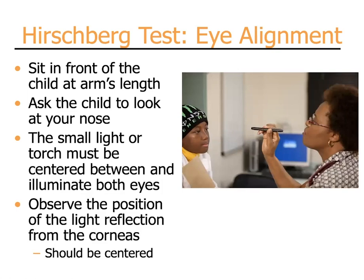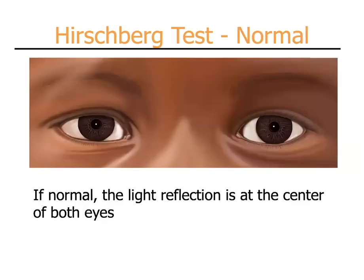The Hirschberg test is a simple test for assessing eye alignment or strabismus. It utilizes a small torch or pen light. Sit in front of the child at arm's length, ask the child to look at your nose, and while centering the small light in front of you, aim the beam centrally between the patient's two eyes so it illuminates both eyes. What you are looking for is the reflection off the cornea of both eyes. These corneal light reflections should be centered in the pupil or very close to it. This is a normal Hirschberg test.